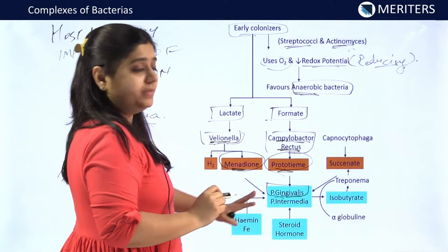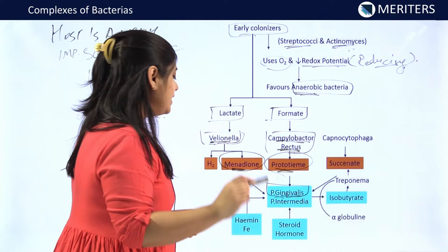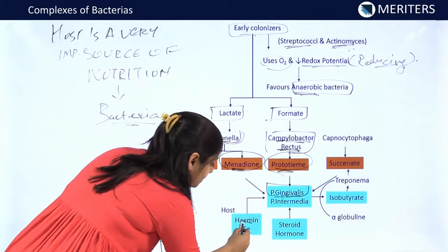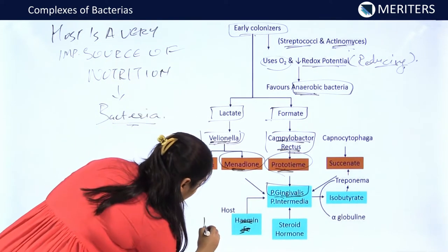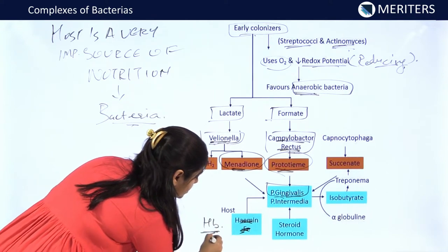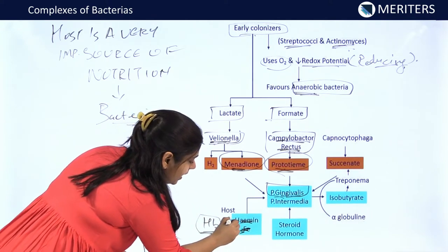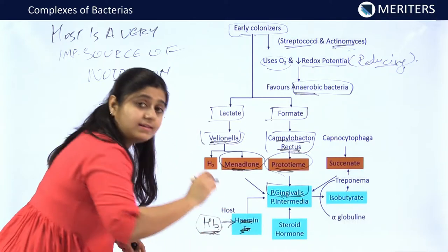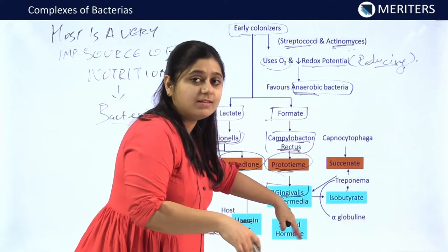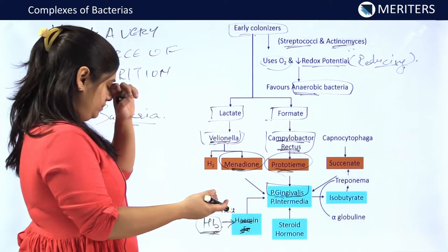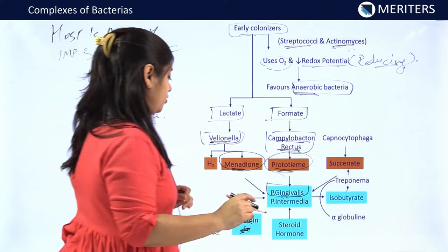P. gingivalis receives nutrition from metabolic products like menadione produced by Veillonella and protoheme produced by Campylobacter rectus. Apart from these two metabolic products, P. gingivalis also uses the heme present in the hemoglobin of the host. This heme iron is utilized by Porphyromonas gingivalis to grow and exhibit its effects on the periodontium.